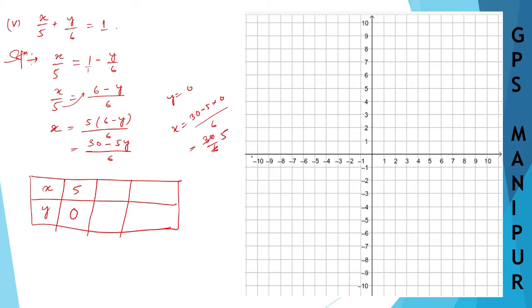Now, when y is equal to 6, let's say, x will be equal to 30 minus 5 into 6 divided by 6, which will be equal to 30 minus 30 divided by 6. 30 minus 30 is 0 divided by 6, which will be 0.